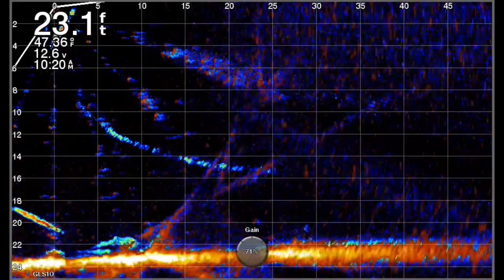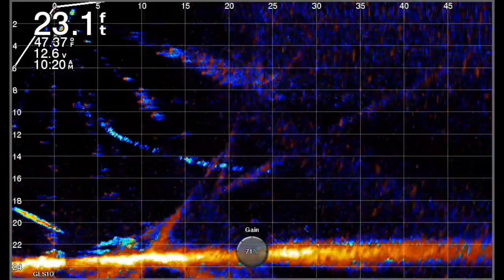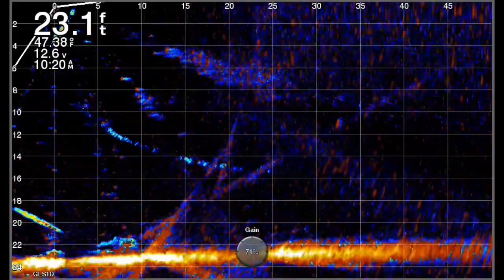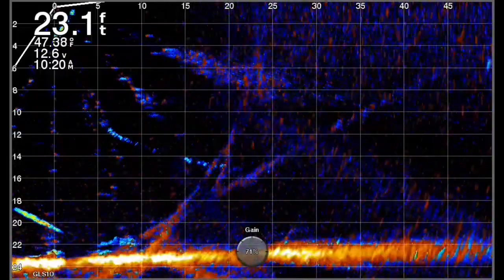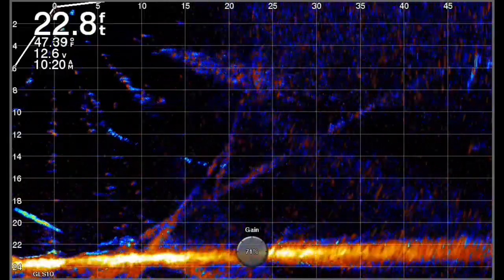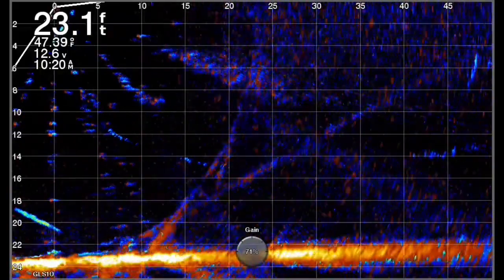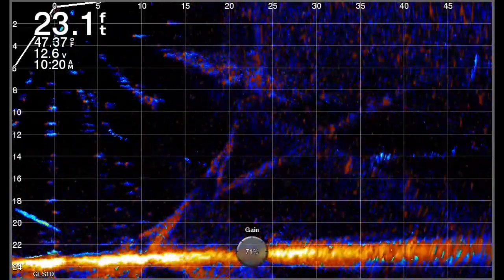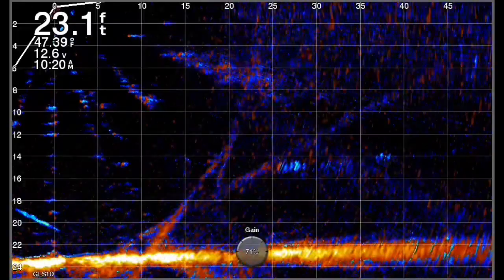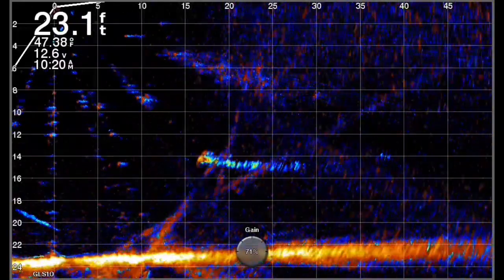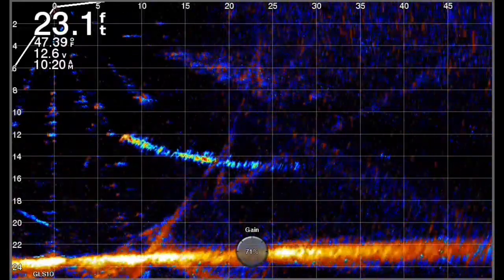Now that didn't matter as much on some of the other baits, but it really mattered on this particular test more than others. As you can see, here comes another one in getting to about that 15-foot depth. Like I said I make four casts.